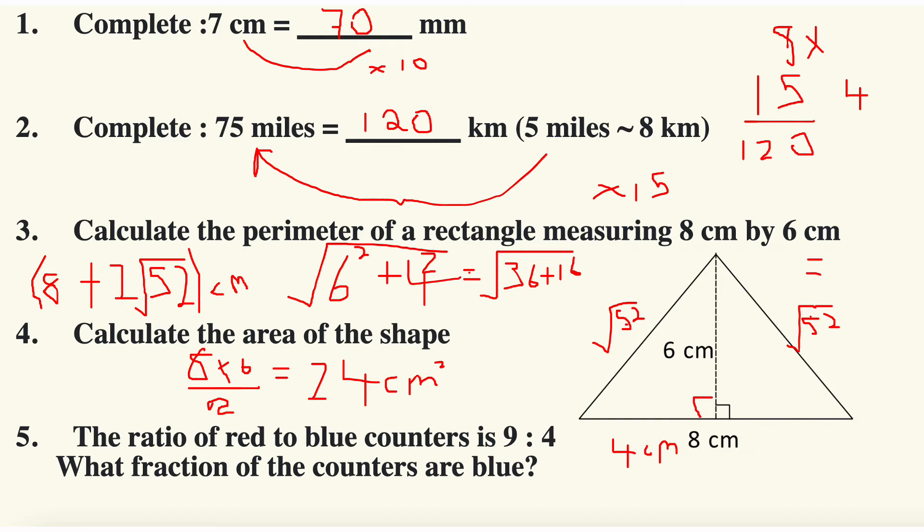This is question number five: the ratio of red to blue counters is nine to four, what fraction of the counters are blue? Well, red to blue is nine to four, so blue is going to be four out of the total of 13, because nine plus four is 13. So the fraction that are blue is four out of 13.